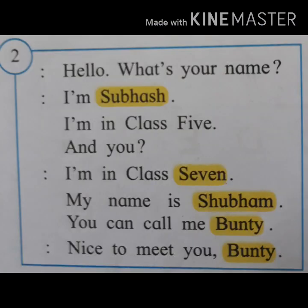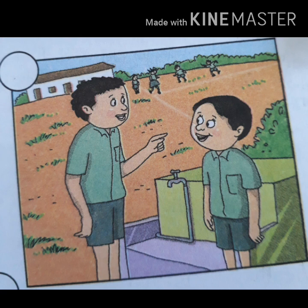Dialogue number two: 'Hello, what's your name?' 'I am Subhash. I am in class 5. And you?' 'I am in class 7. My name is Shubham. You can call me Bunty.' 'Nice to meet you, Bunty.' This dialogue takes place between two students who don't know each other — they are asking names and class details. This picture is suitable and the proper number is two.